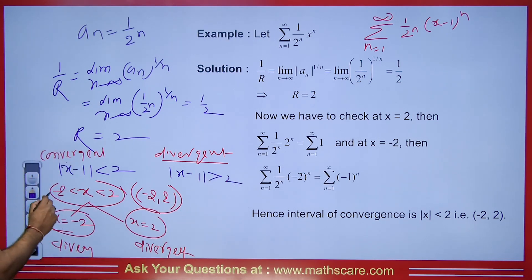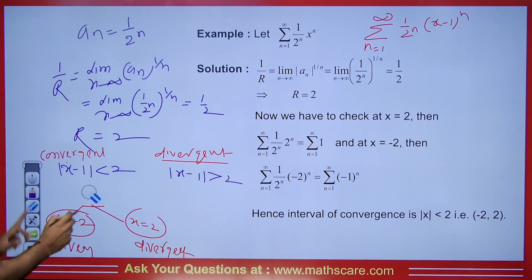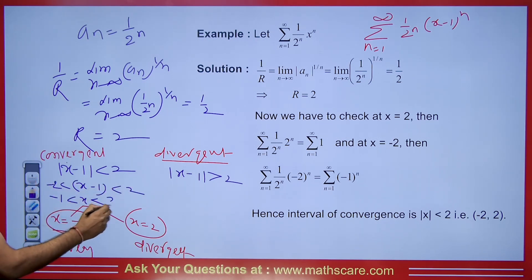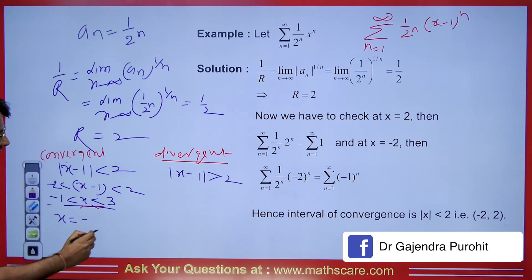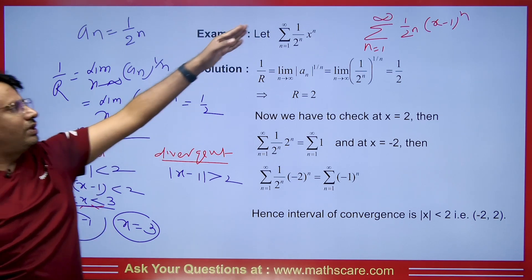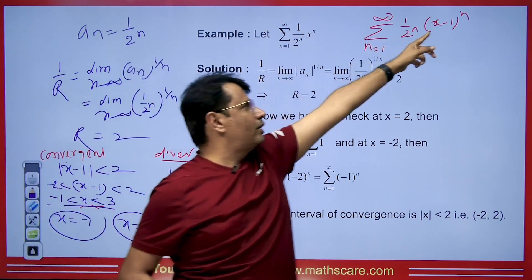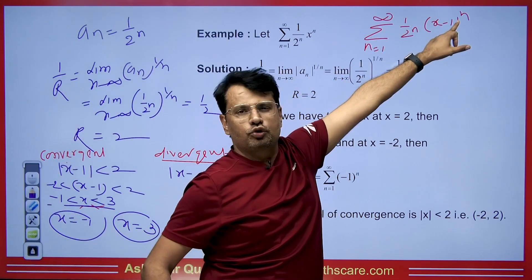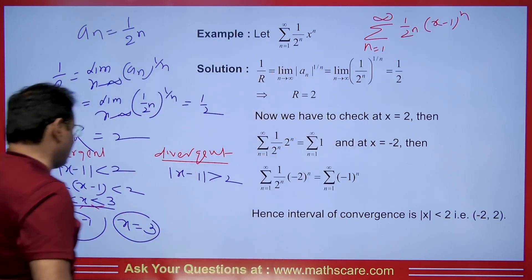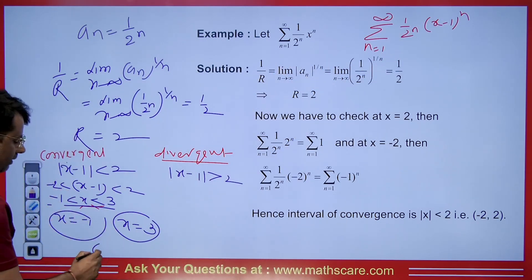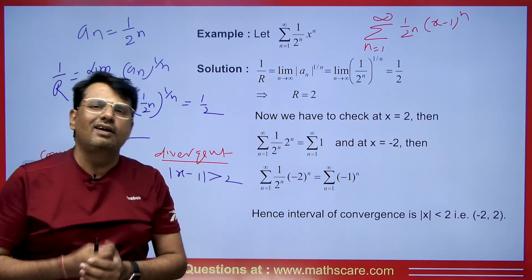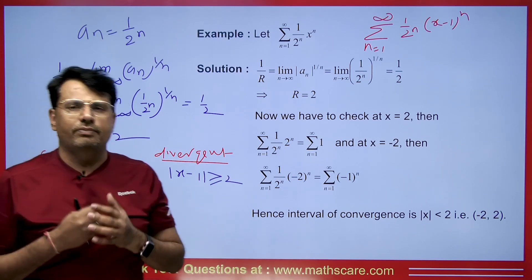Let me show what we get on simplifying. When |x − 1| < 2, this gives −2 < x − 1 < 2, so adding 1 throughout: −1 < x < 3. Now we put x = −1 and x = 3. At x = −1: (−2)ⁿ/2ⁿ is not convergent. At x = 3: 2ⁿ/2ⁿ = 1, again constant — divergent. So the interval of convergence is the open interval (−1, 3) and at all other points the series is divergent.